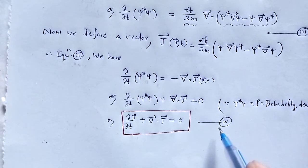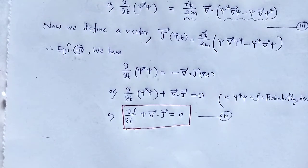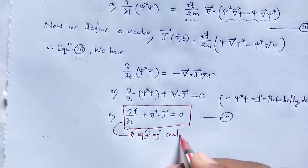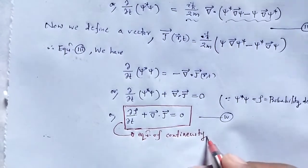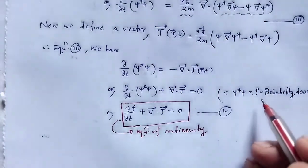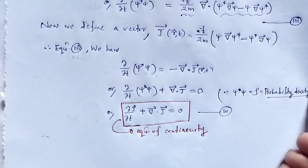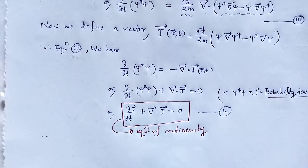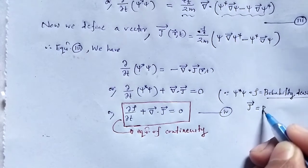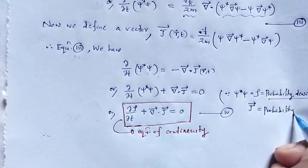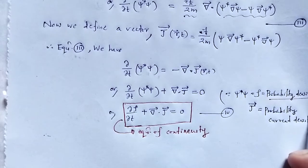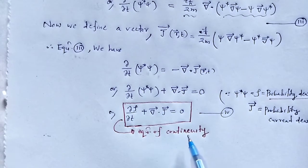That is equation number 4 — the equation of continuity — where ρ is the probability density and j is the probability current density. That is the equation of continuity.